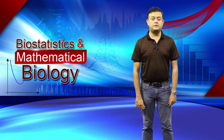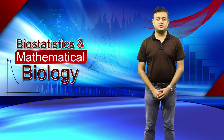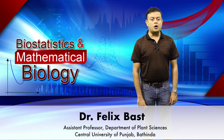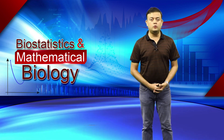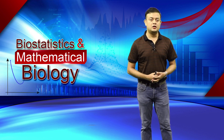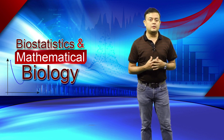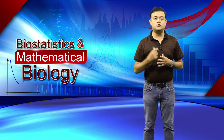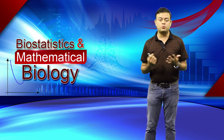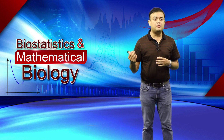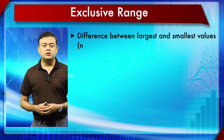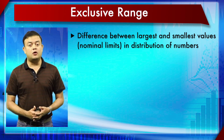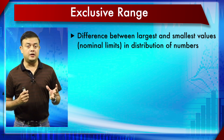Module 8 covers measures of dispersion or interval estimates. Section 1 addresses range, IQR, and MAD. First is range. The exclusive range — which is probably the first range that comes to mind — is simply maximum minus minimum of any data set. The difference between the largest and the smallest values is defined using what are called nominal limits.